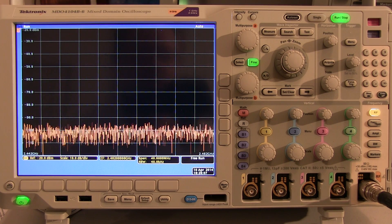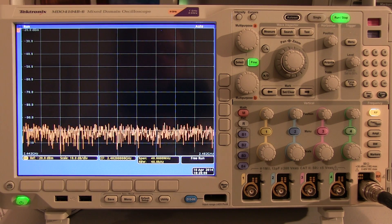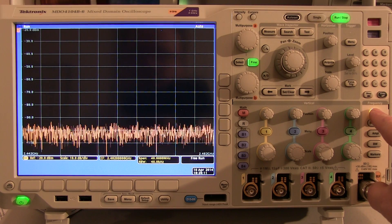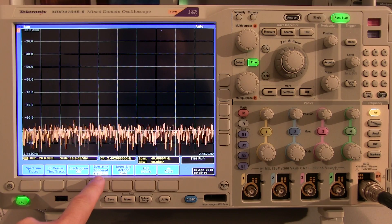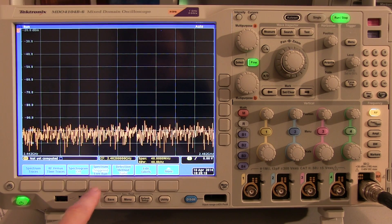So the first thing we need to do is to trigger on that RF burst. If we bring up the RF menu for the Spectrum Analyzer, we can see that the Spectrum Analyzer is currently in Free Run mode. So we'll switch it to Triggered.